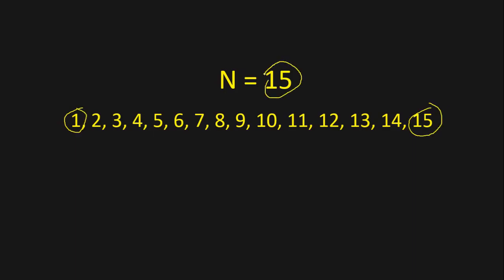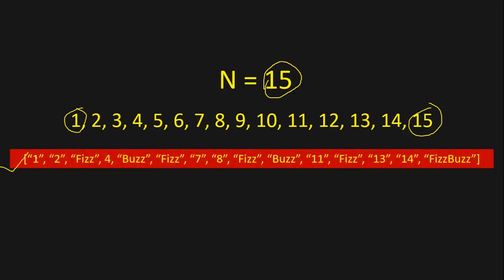For input N=15, we return: 1, 2, Fizz (because 3 is a multiple of 3), 4, Buzz (because 5 is a multiple of 5), Fizz (because 6 is a multiple of 3), 7, 8, Fizz (because 9 is a multiple of 3), Buzz (because 10 is a multiple of 5), 11, Fizz (because 12 is a multiple of 3), 13, 14, and FizzBuzz for 15 because 15 is a multiple of both 3 and 5.